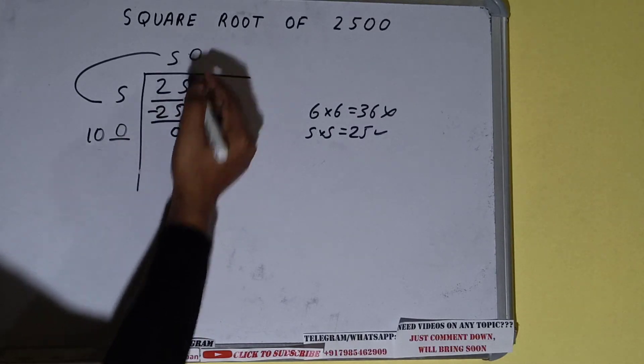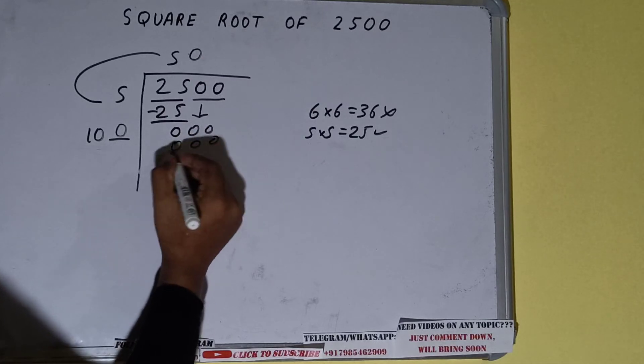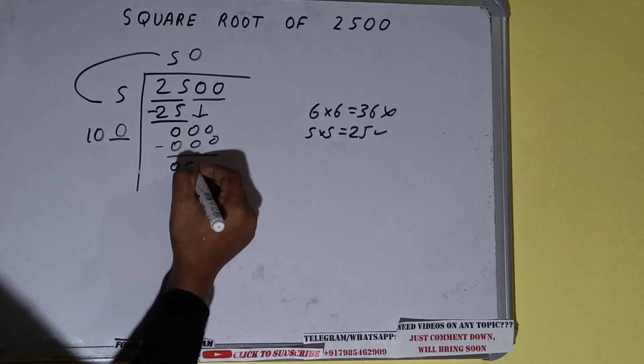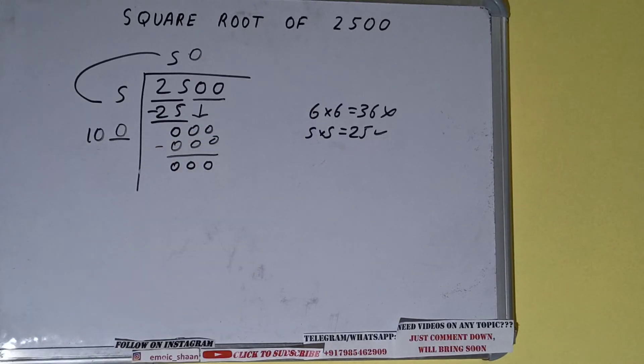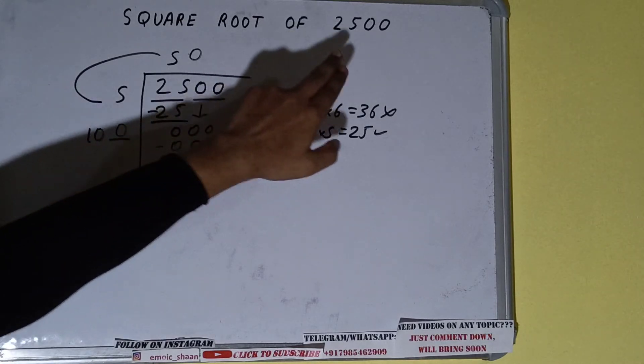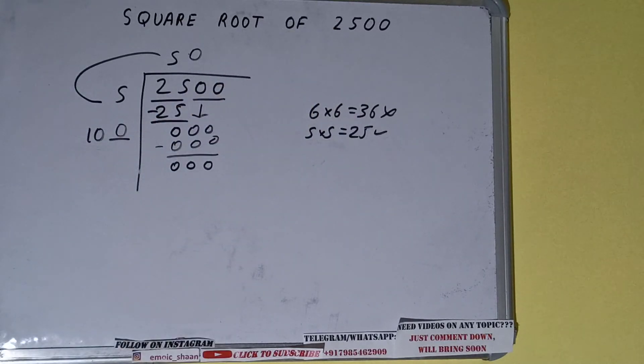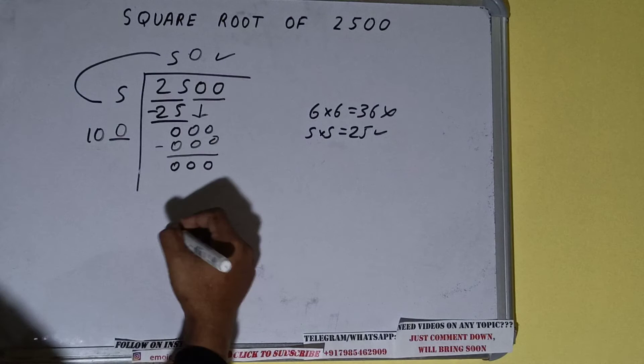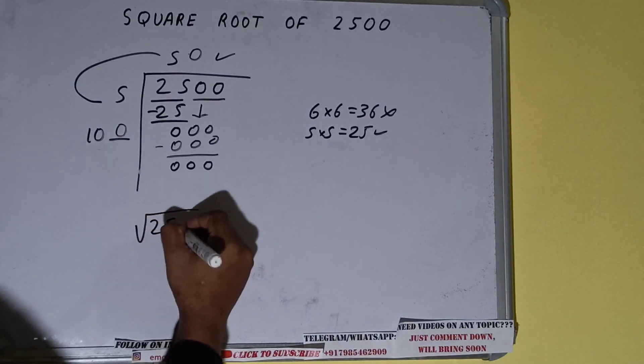And on subtracting we'll again get zero. But now the pair of zeros that were the part of the number is divided, so we have got the answer is 50. So square root of 2500 will be 50. That's it, so this is all.